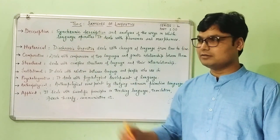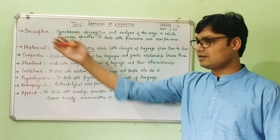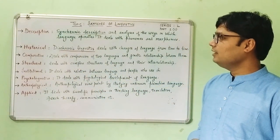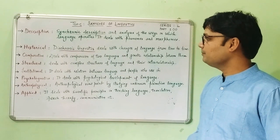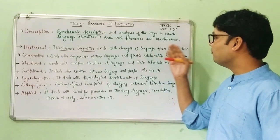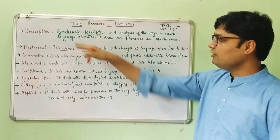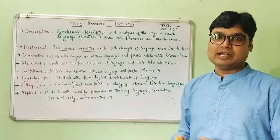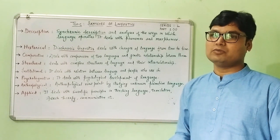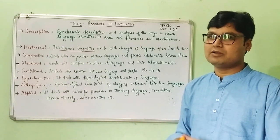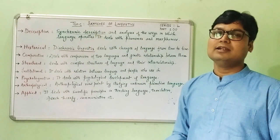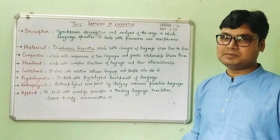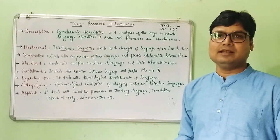The branches are given on the board. We will start from descriptive. Descriptive linguistics is the synchronic description and analysis of the ways in which language operates. Synchronic means at a particular time period, so when we study a language at a given time period, it is called descriptive linguistics. It deals with phonemes and morphemes, which we are going to discuss in coming lectures.